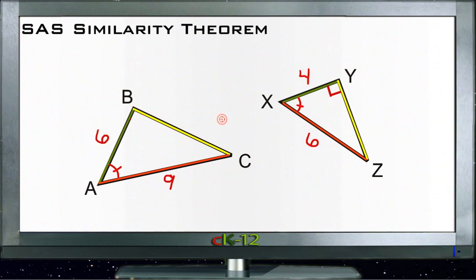Another way to identify whether two triangles are similar is the SAS similarity theorem, which is side angle side.